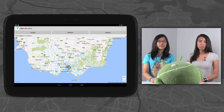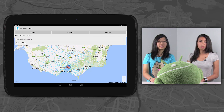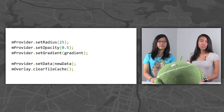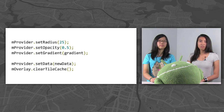You can also change the dataset to completely different data or to an updated version. To do this, call the relevant SetX method on the provider, then clear the tile overlay's tile cache so that it redraws all the tiles with the new option values.